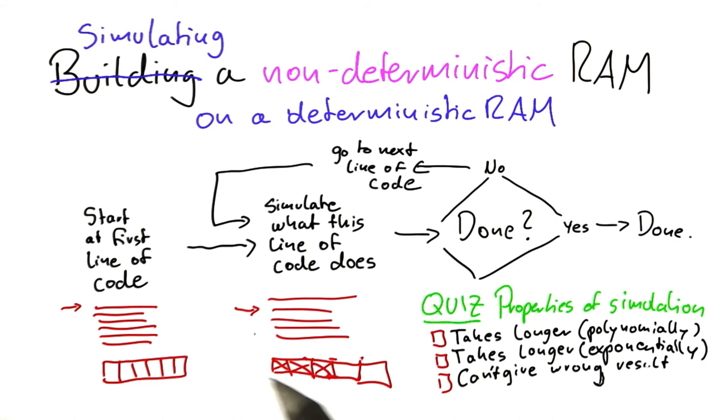In other words, what does it cost us to do such a simulation? Obviously, it will take longer, because we are wrapping some other code around the original program. But how much longer does it take? Does it take longer by a polynomial time factor? And by a polynomial time factor, I mean if, for example,